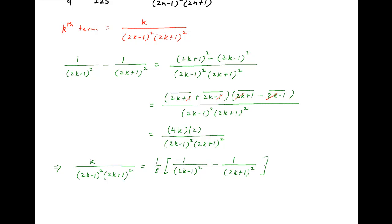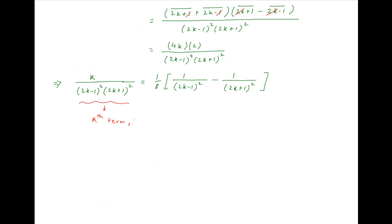The left hand side is the kth term of the given series. Let's denote it by uk. Putting k equal to 1, we get the first term u1 equal to 1 upon 8 times [1 upon 1 squared minus 1 upon 3 squared].